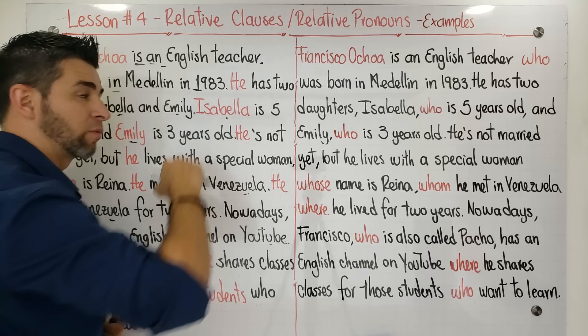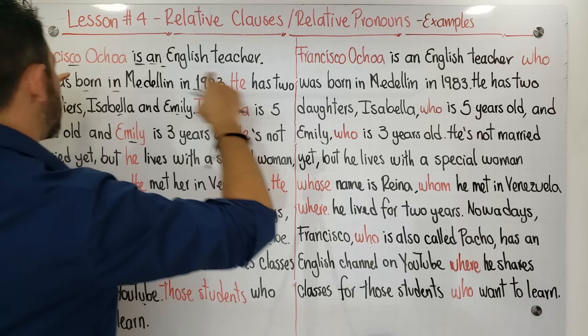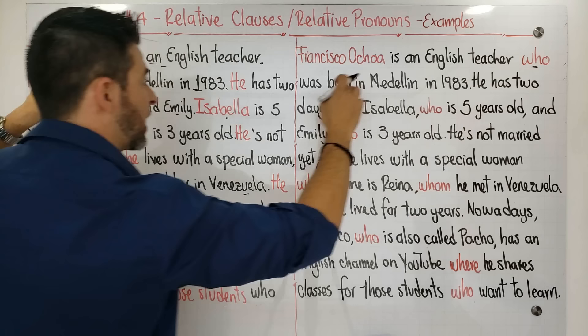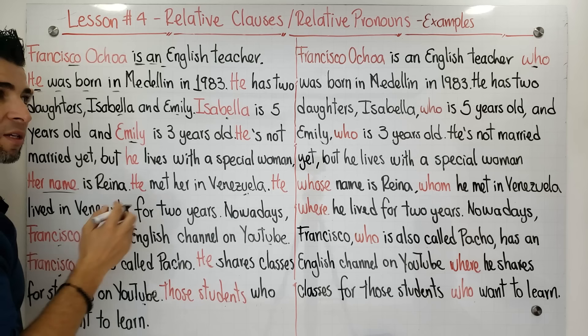That's why I want you to see the difference between writing in the first way and writing with relative pronouns and relative clauses. Look at this: 'Francisco Ochoa is an English teacher' — that's the same independent clause — but now look at what we have: 'who was born in Medellín in 1983.'